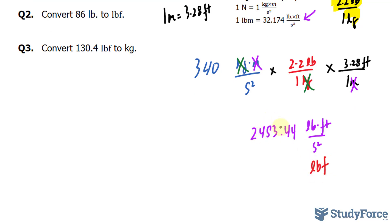Now I mentioned earlier that this unit is the same thing as saying pound force. So we have 2,453.44 pound force. Now that's not the same thing as pound mass. That's what we're looking for. We're looking for pound mass.